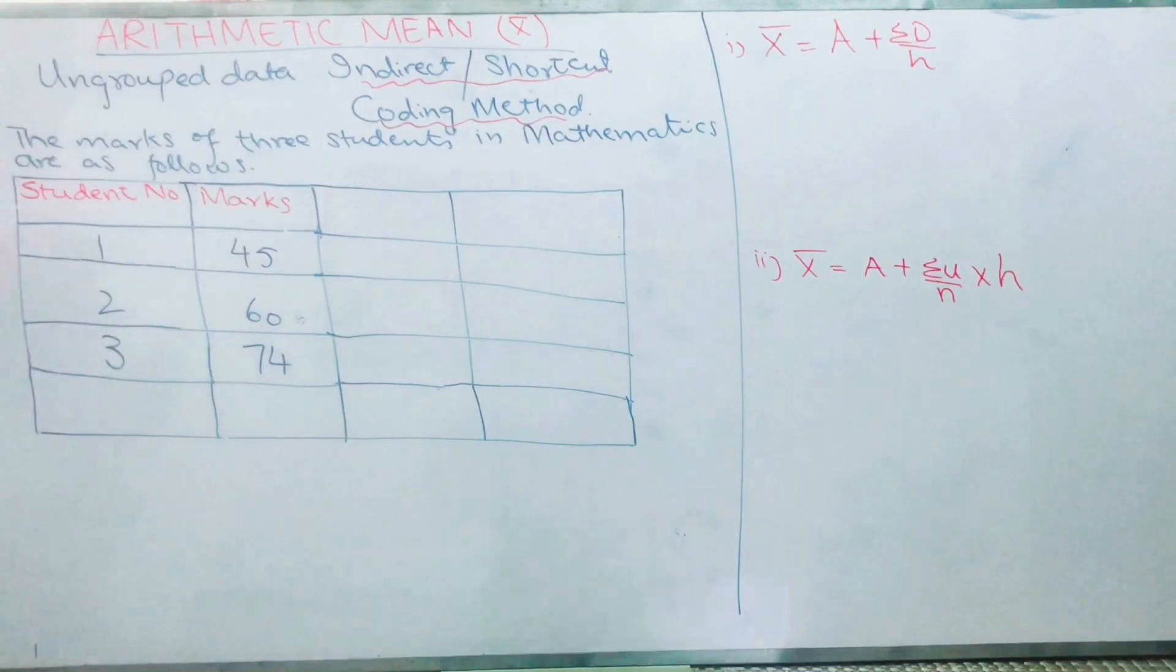Today I am using the same question that we used in our previous video, but we will do this question by indirect method. My question is: the marks of three students in mathematics are as follows. I am having three students and their marks are 45, 60, and 74.